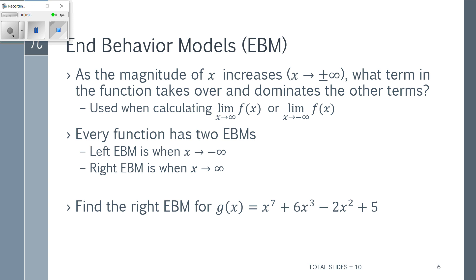The next thing I want to talk about is end behavior models. This is needed for us to be able to talk about what happens with limits where X is going to positive or negative infinity. Those tend to be more challenging because we can't really use graphs or tables to help us out since the numbers are so far out there. To help us with that, we use what are called end behavior models, which can only be used as X is going to positive or negative infinity.